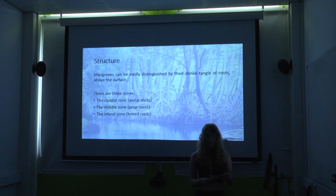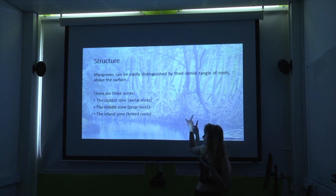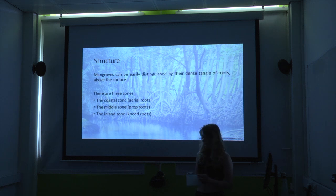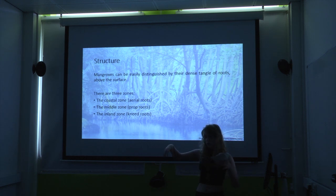Mangroves can easily be distinguished by their roots, which is quite a distinguishing feature. There are three different zones. The first is the coastal zone — as the name indicates, that's the one closest to the coast. You find aerial roots in the coastal zone; they have very strong roots that stick up out of the ground, which is good for stability.